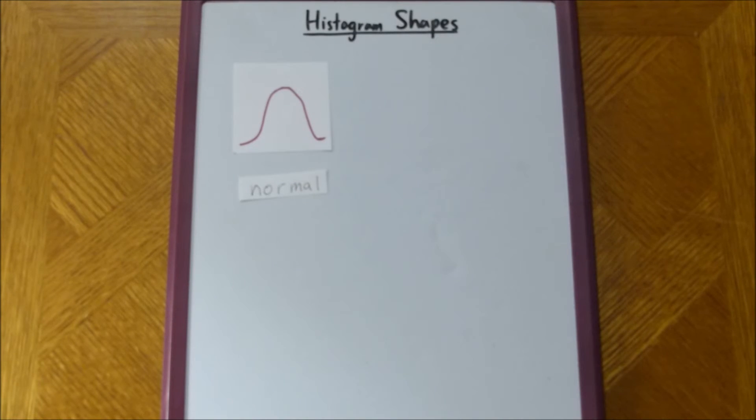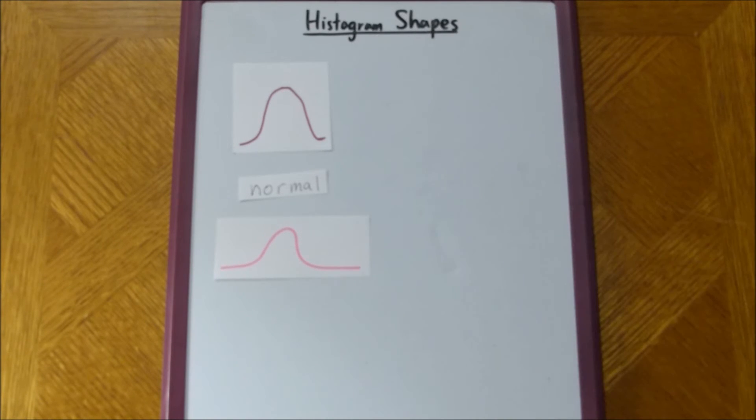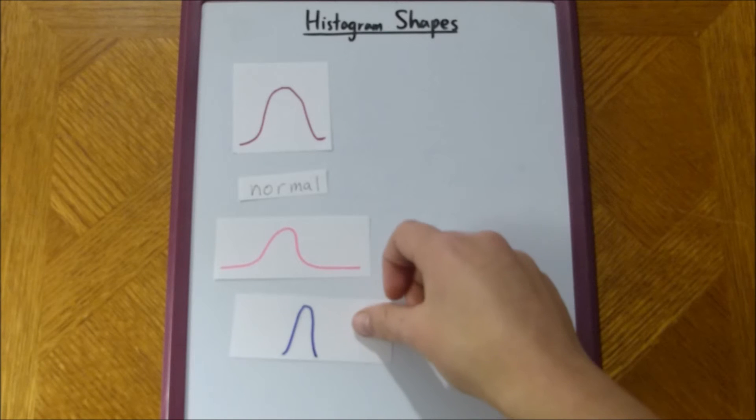Normal. And, there are also two different types of histograms that are normal, but are characterized as two other, sort of, or have two other distinct characterizations. So, we have this graph, and then we have this graph.